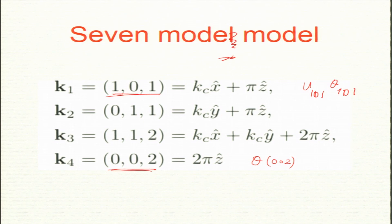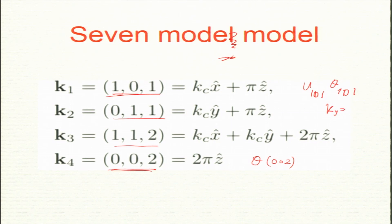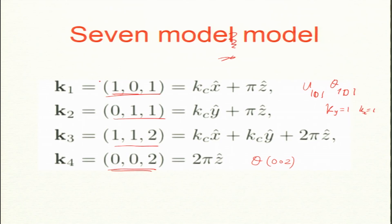Now I introduce two more wave numbers: 0,1,1 and 1,1,2. Mode 1,0,1 has variations in the x-z plane. Mode 0,1,1 has k_y=1 and k_z=1 — it is y-z dependent. Imagine one roll going in the x-z plane and another roll going in the y-z direction. They interact via non-linear interaction requiring a third mode — they interact via 1,1,2. If I put minus signs: −1,−1,−2 they add up to 0. These three form a triad.